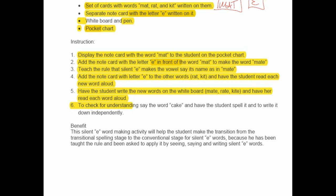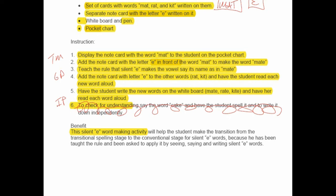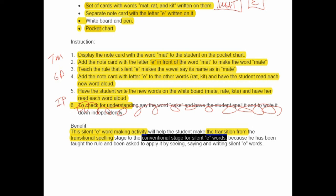Step six — having the child write the word cake to try to apply the rule — is overkill, so just keep it at step five. Clearly we have teacher modeling, guided practice, and independent practice. The benefit is straightforward: it's a silent E word-making activity that will help the student transition from the transitional spelling stage to the conventional spelling stage for silent E words, because we taught a rule and asked the child to apply it by seeing, saying, and writing silent E words.